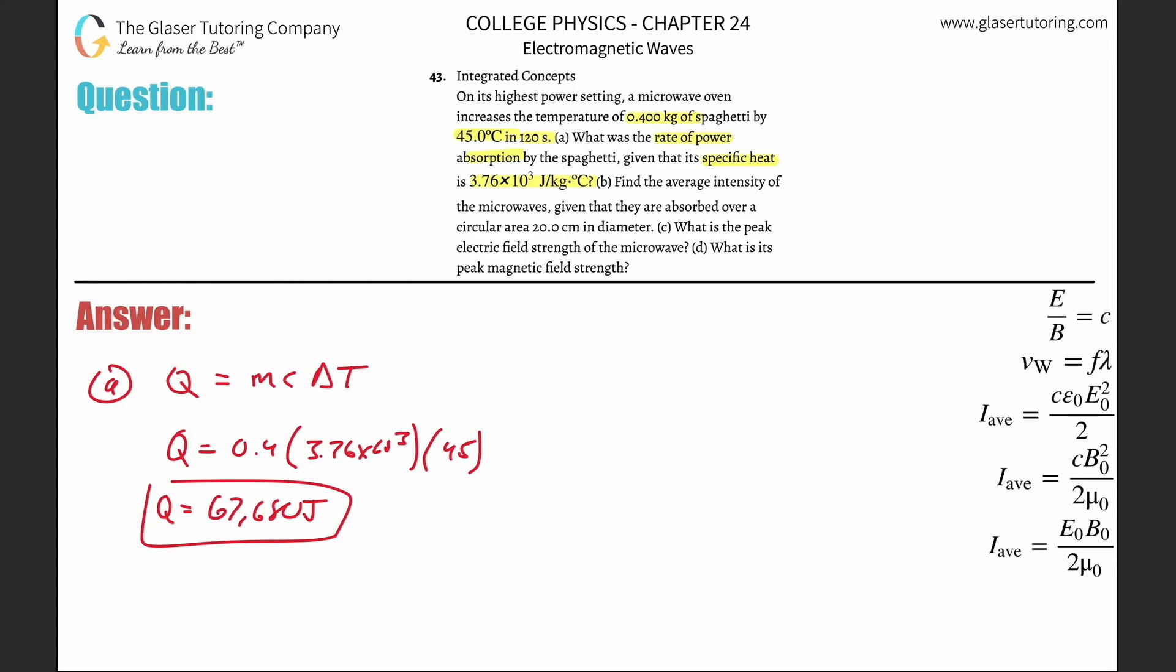So this is the amount of joules it's going to take to raise the temperature of that spaghetti by 45 degrees Celsius. Now it wants to know what is the rate of power absorption. Power is energy per time. So that means that the energy we calculated here is going to be 67,680 divided by the time over which it took to increase that pasta's energy. So divide that by the 120.